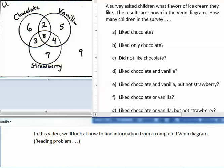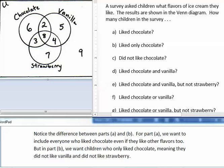A liked chocolate. B liked only chocolate. Notice the difference between parts A and B. For part A, we want to include everyone who liked chocolate, even if they like other flavors too. But in part B, we want children who only liked chocolate, meaning they did not like vanilla and did not like strawberry.